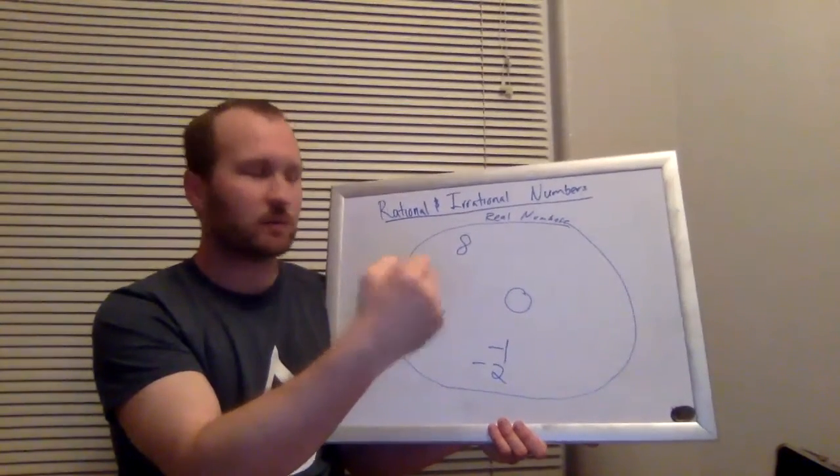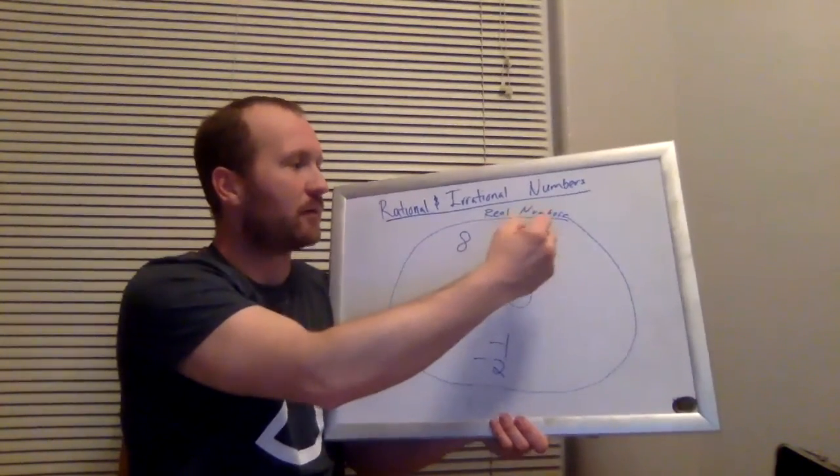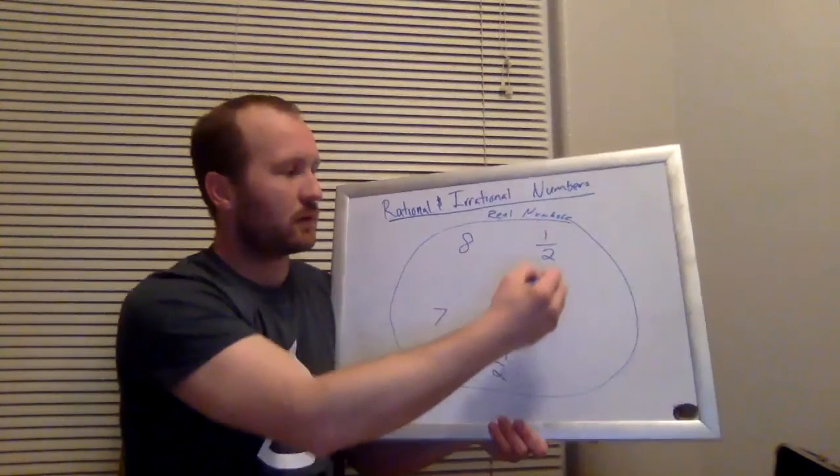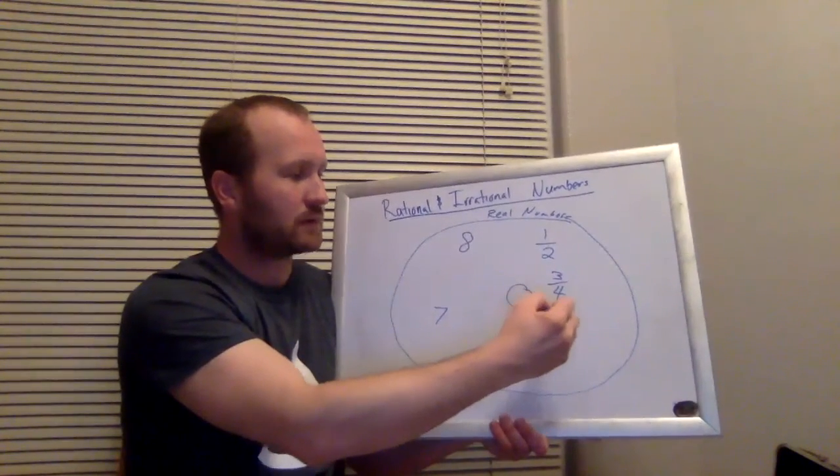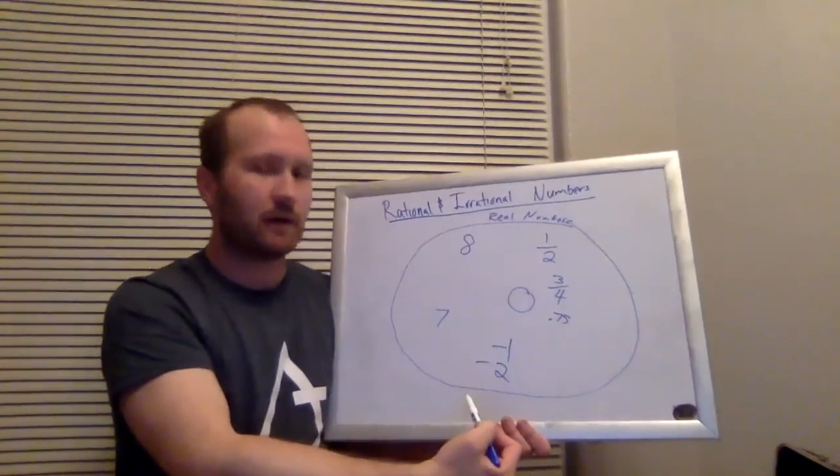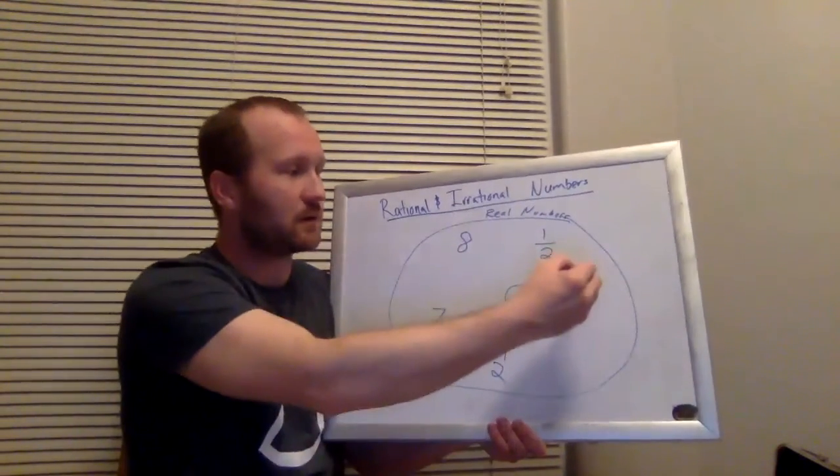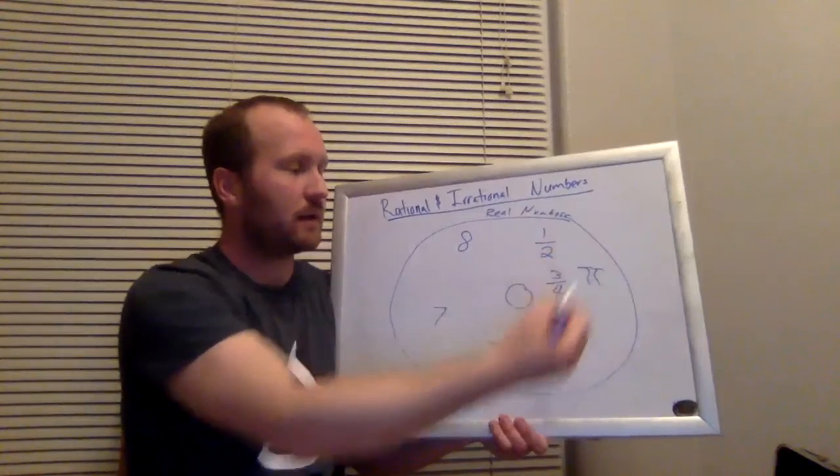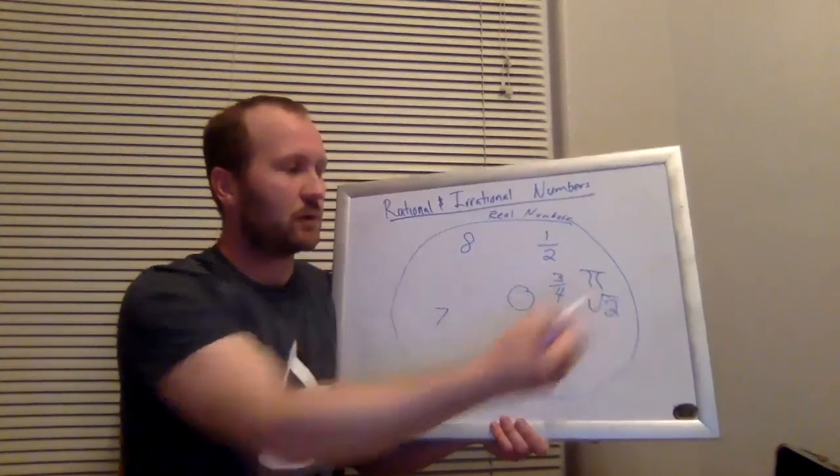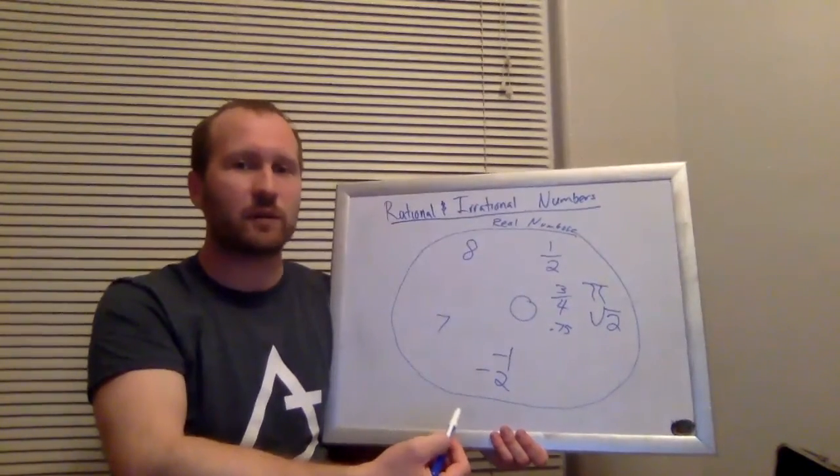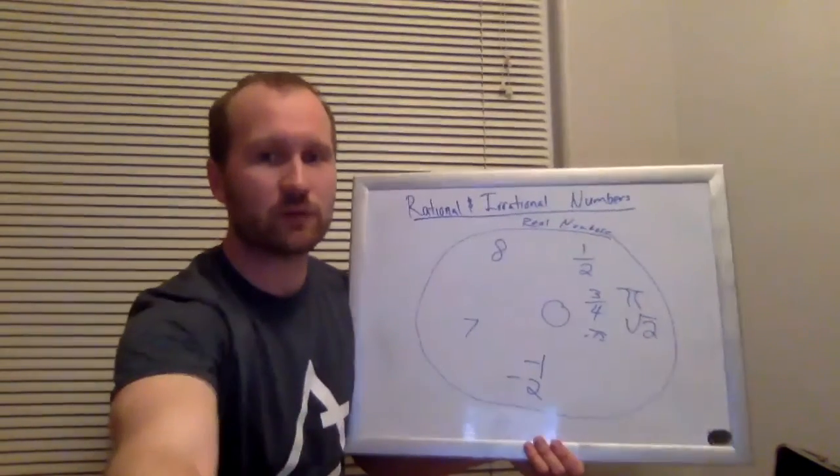All these are real numbers, but so are numbers like one-half or three-fourths or 0.75. Other real numbers include pi, right, the square root of two. These are all real numbers, different types of real numbers.